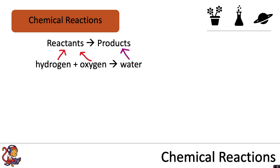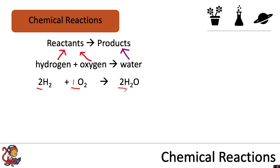You may also see these written as a symbol equation, using the symbols of the elements from the periodic table. Here we can see hydrogen, H2, reacts with oxygen, O2, to produce water, H2O. You'll also notice some numbers in front of the hydrogen and the water; there's no number in front of the oxygen. This means that we need two lots of hydrogen, one lot of oxygen — we never write the one — and two lots of water.